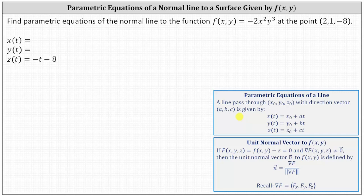Recall we can determine a normal vector to the surface by first determining F(x, y, z), which equals the given function f(x, y) minus z equals zero.